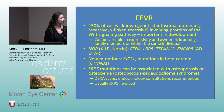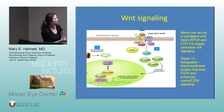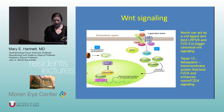Remember that LRP5 can be associated with FEVR, osteoporosis/osteopenia, and pseudoglioma syndrome. DEXA scans and endocrinology are recommended. It has also been described with DiGeorge syndrome — immunodeficiency and poor growth — and congenital microcephaly. The WNT signaling pathway: normally WNT binds to Frizzled-4, LRP5, and LRP6; TSPAN12 is a tetraspanin in the membrane. This pathway leads into beta-catenin signaling. Norrin, the NDP mutation product, can also bind Frizzled-4 and LRP5.